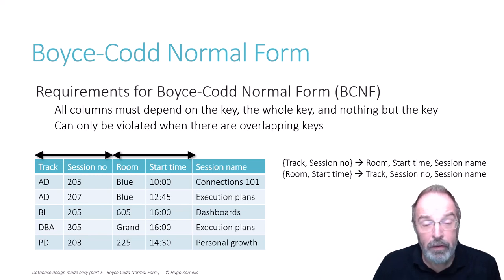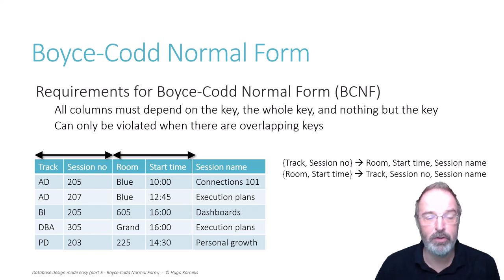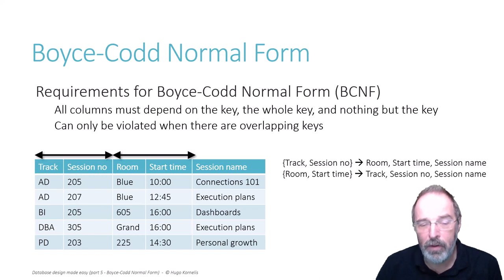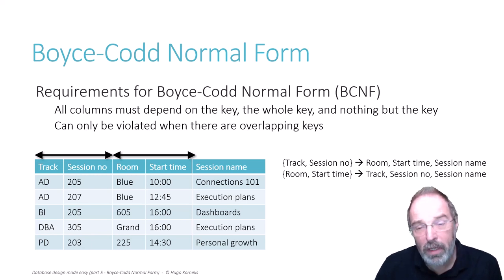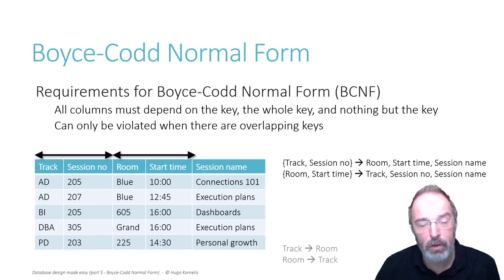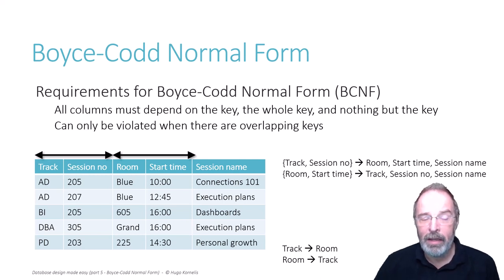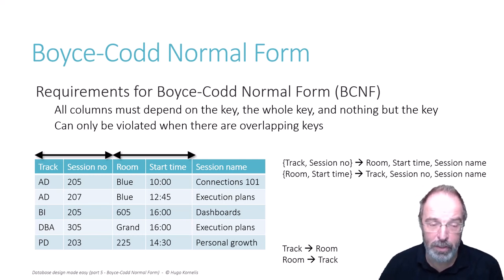For a generic conference, these are all the functional dependencies you will find. Session name by itself is not unique, and session name combined with start time or room does not determine any other columns. These are the keys. However, that is true in a generic case. But what if my customer has a specific additional requirement? My customer likes to have their conferences organized so that all the sessions that belong to the same track are in the same room, and conversely that all the sessions that are in a room belong to that same track.